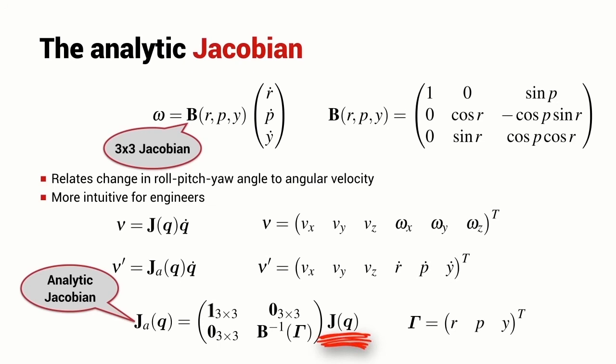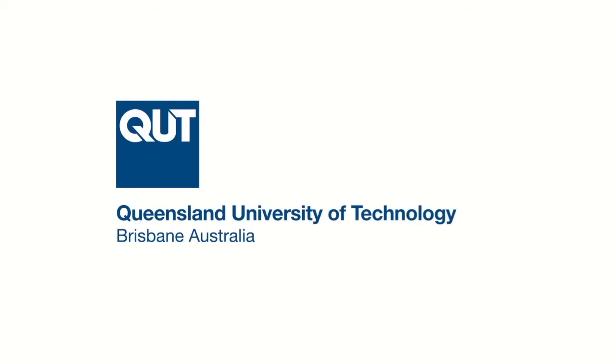It contains a lot of ones and zeros, and it also contains the inverse of the 3×3 Jacobian matrix B. B is a function of the roll, pitch, yaw angles, which I denote by the symbol capital Γ.